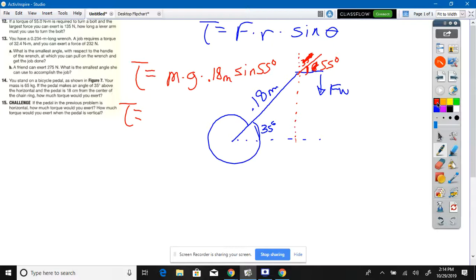If we have kilograms, how do we get weight? Mass times gravity times 0.18 meters times the sine of 55 degrees. The pedal's up here, it's not flat, so the weight's not operating at 90 degrees. You get 93 Newton meters.